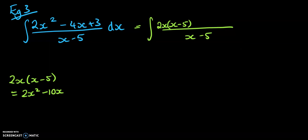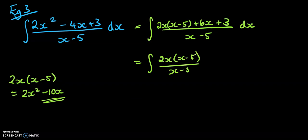Okay, so that 10x doesn't quite match the 4x, and it also doesn't give me the plus 3. So I need to add on 6 more x's, because I've got to get from this minus 10x back up to this minus 4x. And I also need to add a 3. So then we get 2x times x minus 5 over x minus 5 plus 6x plus 3 over x minus 5. And we've got to do the whole thing again on this bit here.